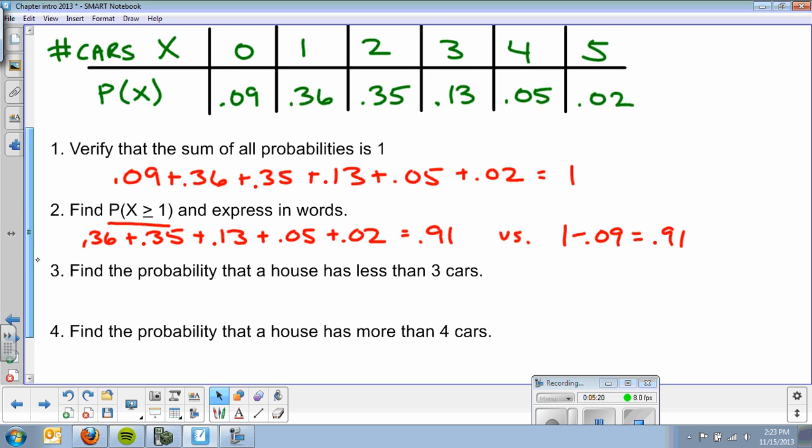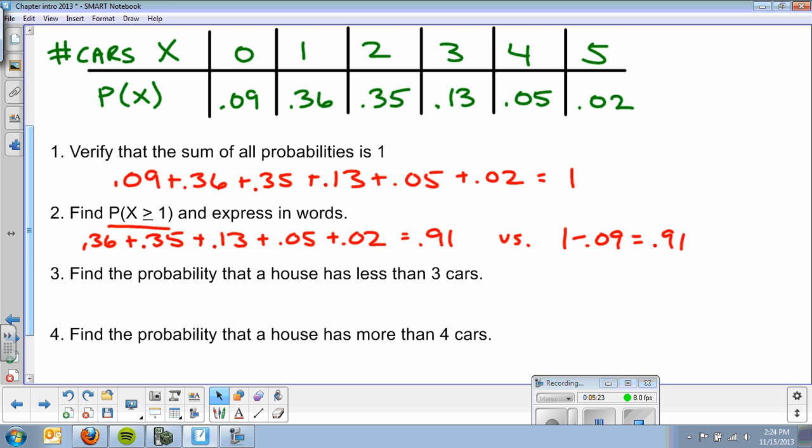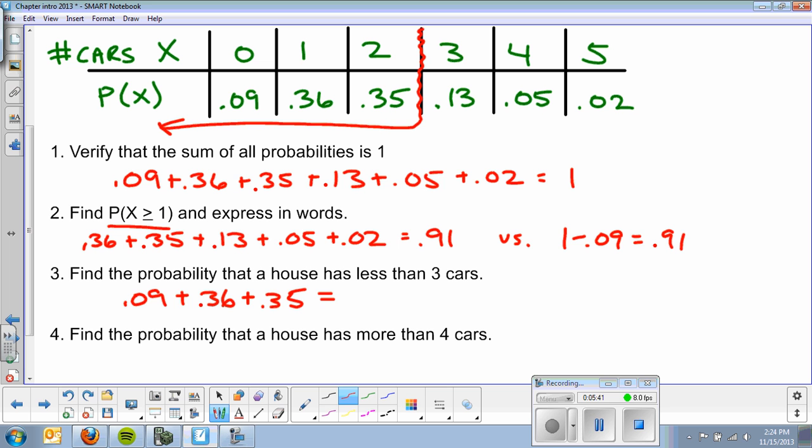Alright. Next question. Find the probability that a house has less than three cars. Now, less than is not less than or equal to. It does not include three. So, basically, I'm looking for less than three. So, it's all of this area. So, I'm going to add 0.09 plus 0.36 plus 0.35 and get 0.80. Alright. And, just for some practice with this, that's the probability that X is less than three. Okay. Less than three cars.